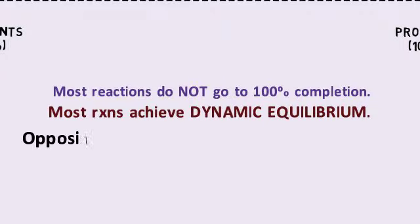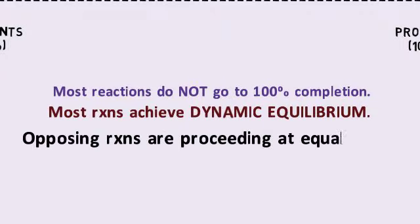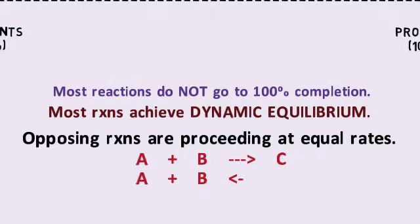It is not that they have gone to products and stayed that way. It is that they can go back and forth. Opposing reactions are proceeding at equal rates. So A plus B yields C, for example. A and B are the reactants. However, C can also decompose back into A plus B at any particular time.